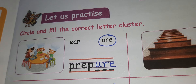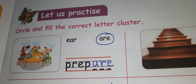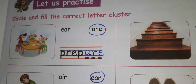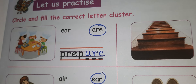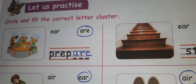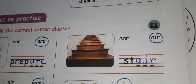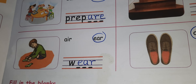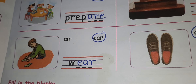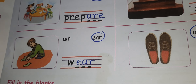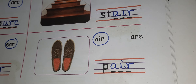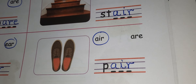In page number 115, let us practice: circle and fill the correct letter cluster. Here it's 'prepare' - A-R-E. Here it's T-A-I-R. Here it's W-E-A-R. In this picture it's 'pair of shoe' - P-A-I-R.